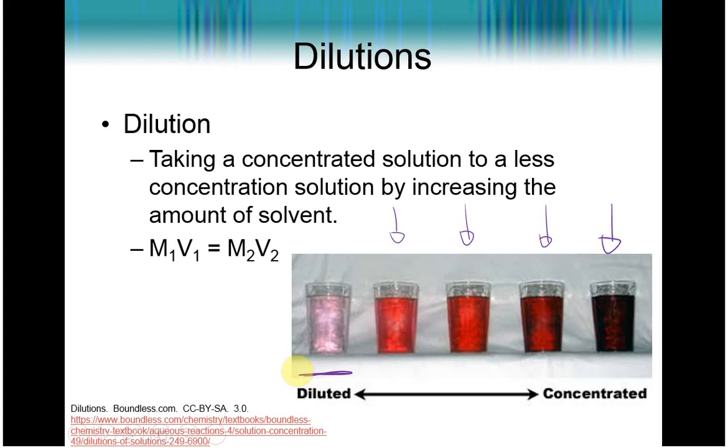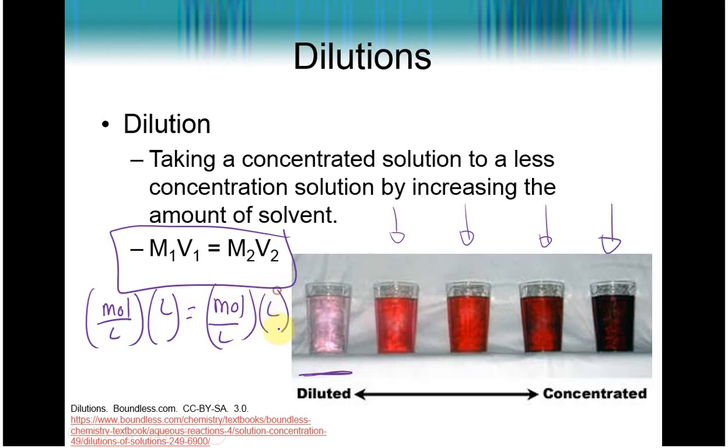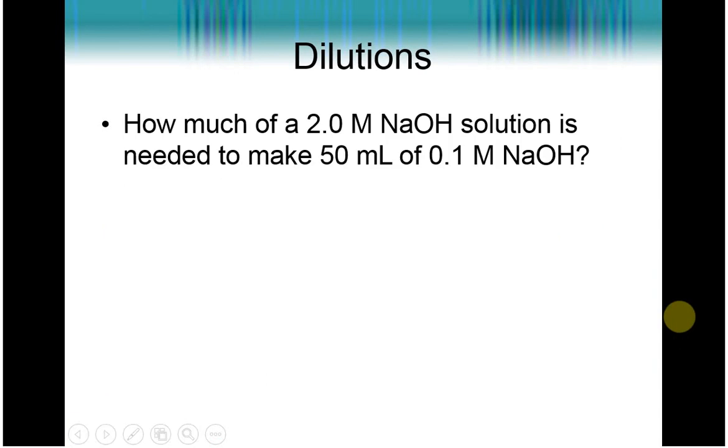Now, for dilution calculations, you have a separate formula that is called M1V1 is equal to M2V2. Here we have molarity, which is moles per liter at one situation multiplied by the volume at that situation equal to the molarity at a new situation multiplied by the new volume. And if you look, our liters cancels. And so it really means that moles of solute is going to stay the same even after you dilute it. And that makes sense because you're not adding in any sugar, you're just adding in solvent.